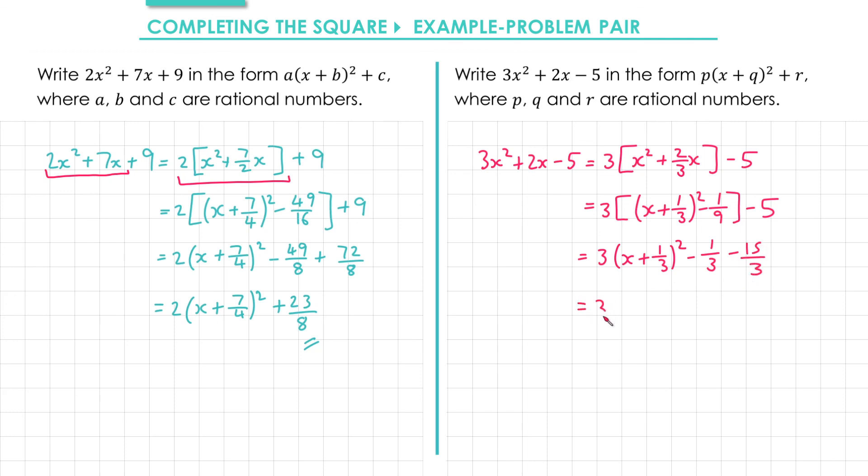Finally I'll just simplify the last two terms. Minus 1 third minus 15 thirds gives me minus 16 thirds.